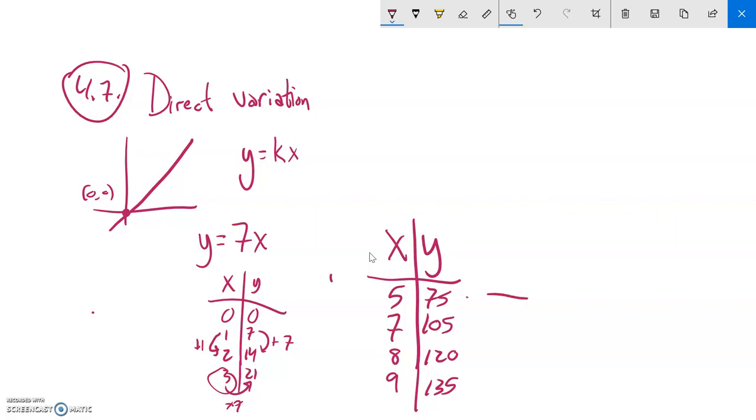One way I can analyze it is I could just do some division. So let me see: 75 divided by 5, that's 15. Or 105 divided by 7, that's also 15. So notice if I do that every time here, I'll always get 15. That means that y is equal to 15 times x. This would be direct variation.